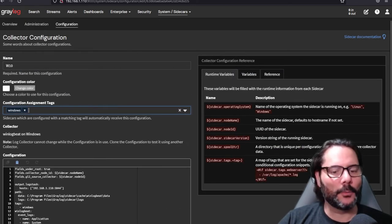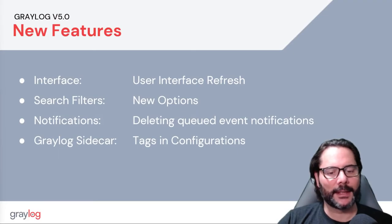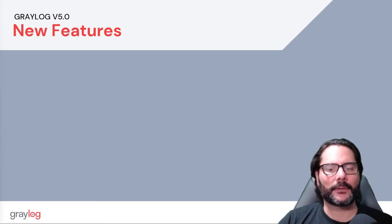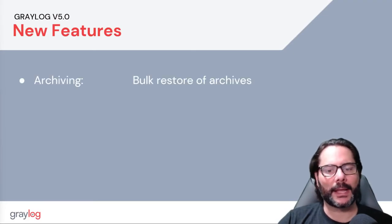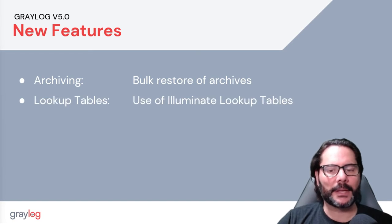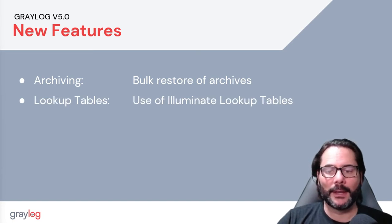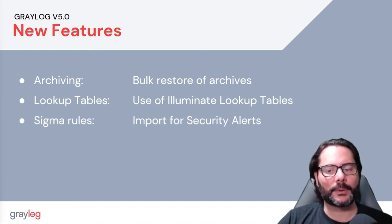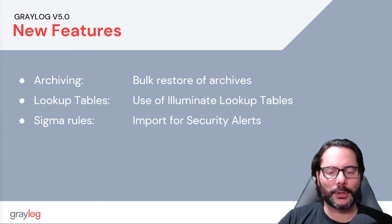Now we'll move on to the next set of features, which are some additional ones related to archiving. Archiving now has bulk restorations, so you can restore more than one archive all at once. We have updates to lookup tables, so Luminate lookup tables can be used with your own pipelines, viewing those names instead of the adapters. And I'm very pleased to announce that we've added support for Sigma rules — you can import Sigma rules through the security menu.